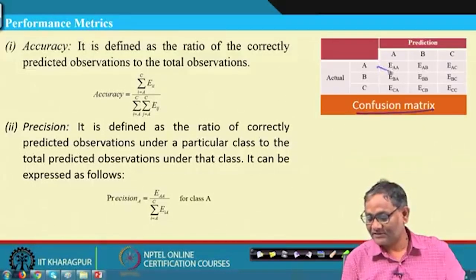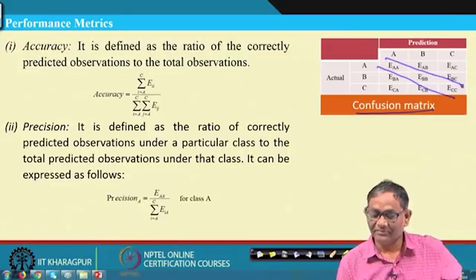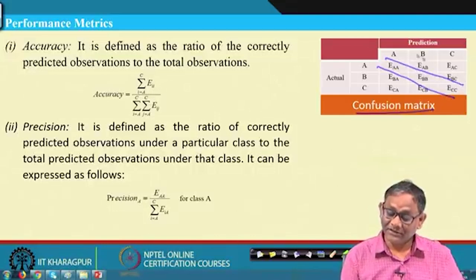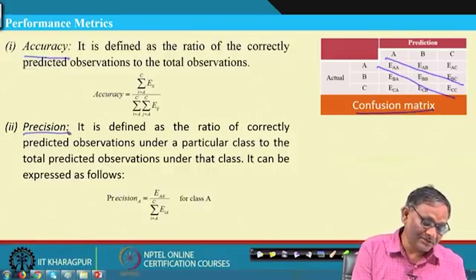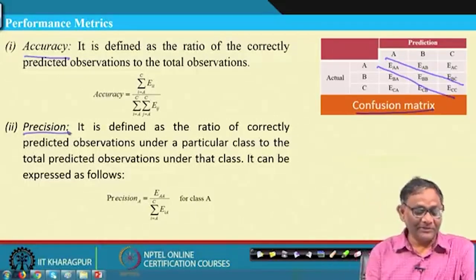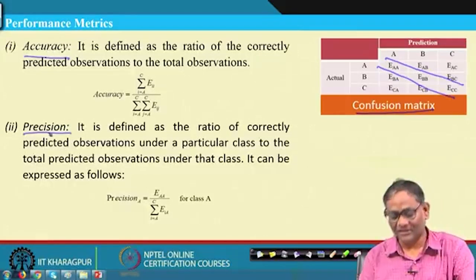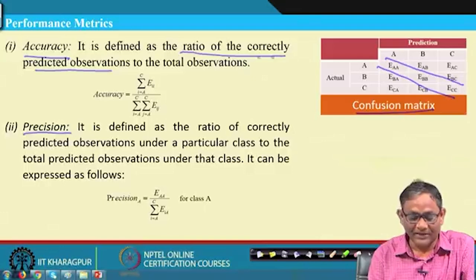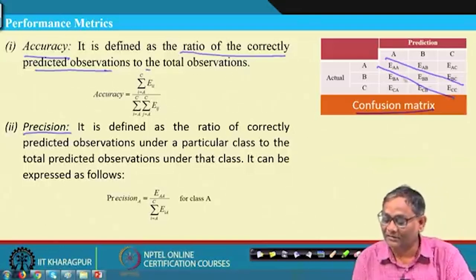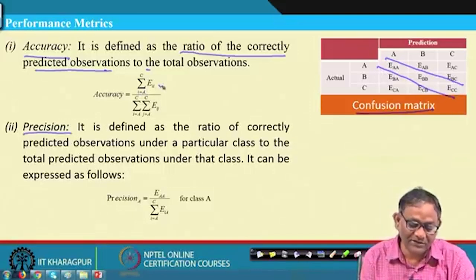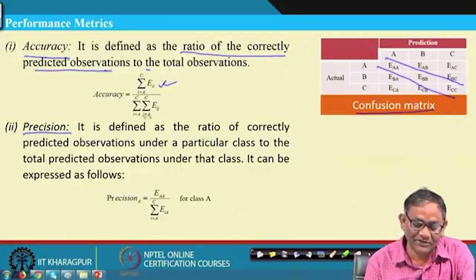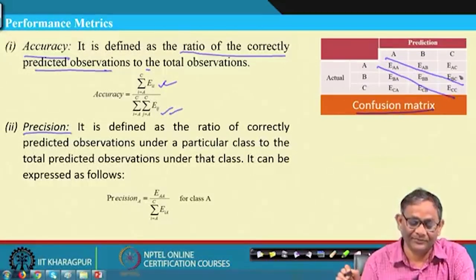In the confusion matrix, diagonal elements represent correct classifications. The classifier performance is tested using this matrix. Several performance metrics have been developed. Accuracy is defined as the ratio of correctly predicted observations to the total observations — that is, the sum of diagonal frequencies divided by all observations.